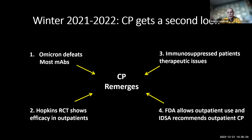Last year at this time, convalescent plasma gets a second look. Omicron appeared and defeated most initial monoclonal antibodies. The Hopkins randomized controlled trial — the only outpatient trial in the United States — showed efficacy. Immunosuppressed patients emerged as the big problem — they often can't clear infection, and if B-cell depleted they won't respond to vaccines. The polyclonal quality of plasma appeared to be an advantage. The FDA moved rapidly after receiving the Hopkins data and recommended allowing outpatient use, and the IDSA also recommended outpatient use.